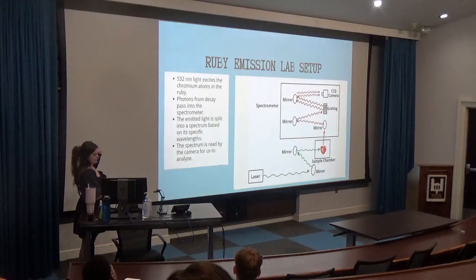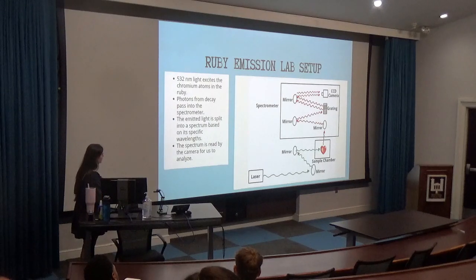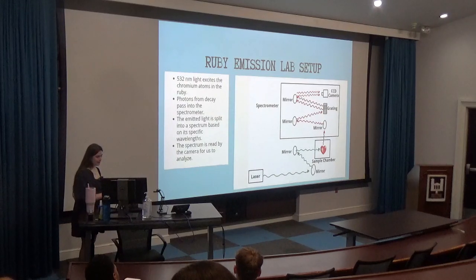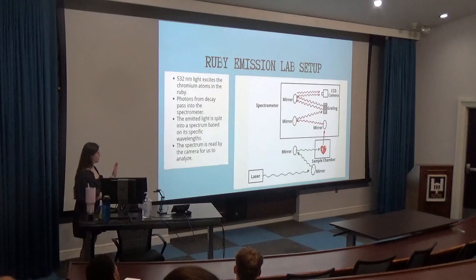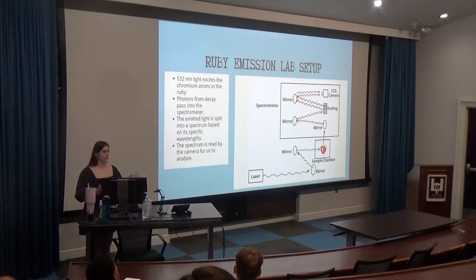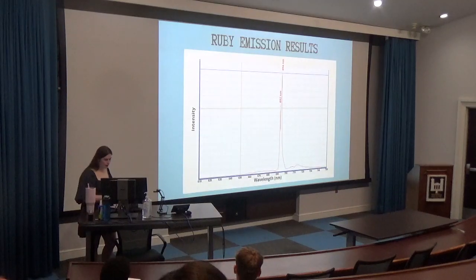Looking at our first experiment, here is a schematic of what our experiment looks like when we took the emission spectra of the ruby. We used a constant green laser — a 532 nanometer laser — to excite the ruby crystal. The emitted photons passed into the spectrometer, then through a grating that split the photons into their respective wavelengths. We were able to read this spectrum from the CCD camera connected to our software. And this is what the actual lab looks like — just a couple of wires, not a big deal.